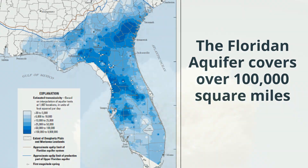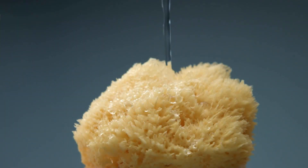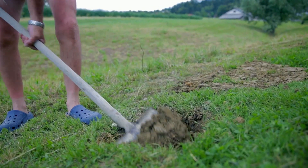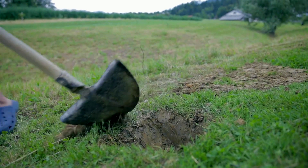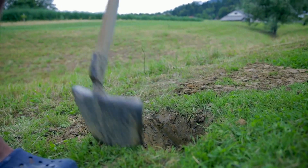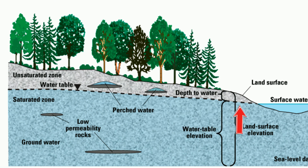Think of an aquifer like a huge underground sponge that soaks up the water that falls to the surface of the earth. If you grabbed a shovel and started digging straight down, you may strike water. The first water you strike is called the water table. Below the water table, the rock may be completely soaked. This is called the saturation zone.